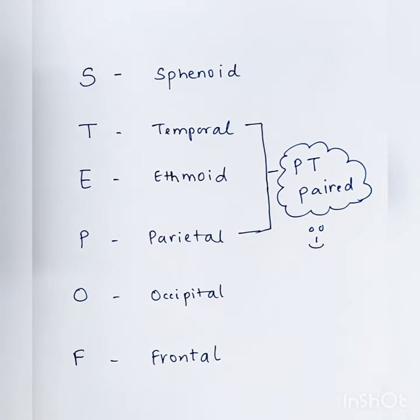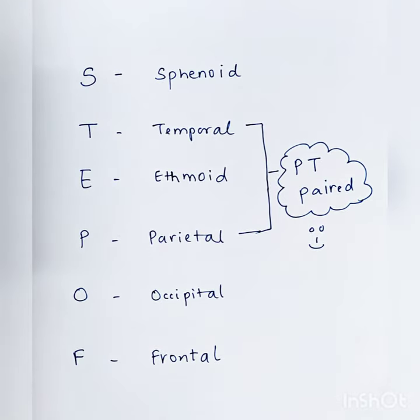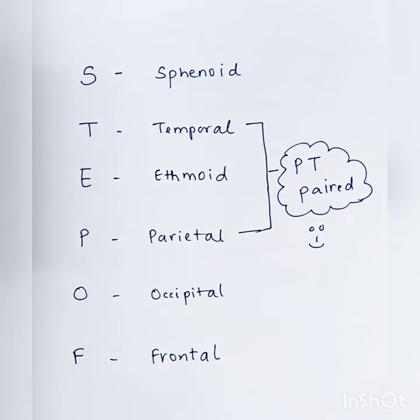For S you have sphenoid, for T you have temporal, for E you have ethmoid, P is parietal, O is occipital, and F is frontal. So these are the six cranial bones.